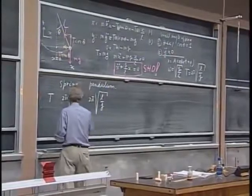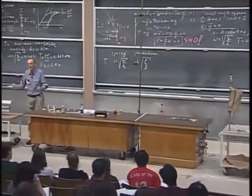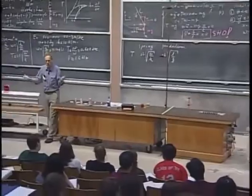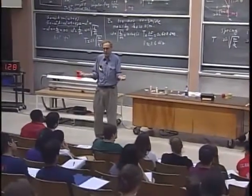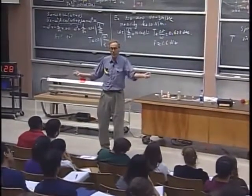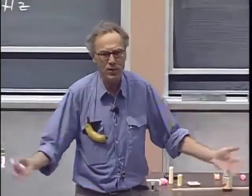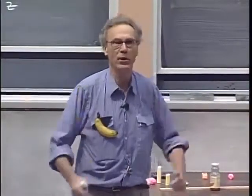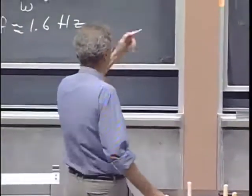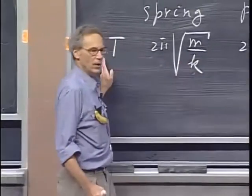How about this k? If k is high, then a spring is stiff. What does that mean? It means that if I give it a small extension, the spring force is huge. If I have a huge spring force, the acceleration on a given mass will be high. If I have a high acceleration, the period will be short. And that's exactly what you see — if k is high, the period will be short.